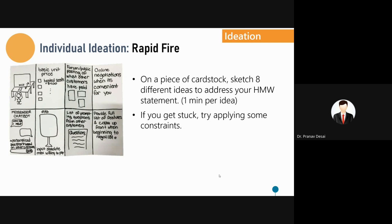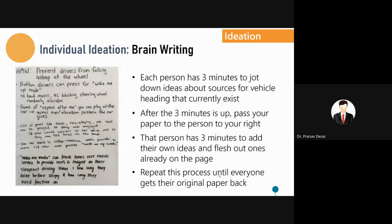Come up with 'how might we' statements that address pain points and the opportunities you have identified. Cluster related ideas into themes — for example, making the audio-visual experience memorable in automobiles. For ideation, on a piece of cardstock sketch eight different ideas to address your 'how might we' statement — one idea per minute — applying various constraints. Build these quadrants of different ideas in sequence; it is a kind of brain writing in pictorial form.